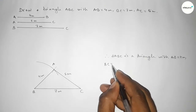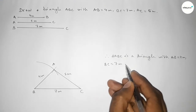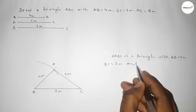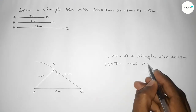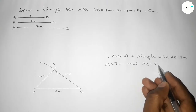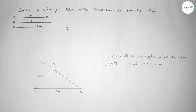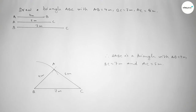Triangle ABC has AB equal to 4 centimeters, BC equal to 7 centimeters, and AC equal to 5 centimeters. That's all — thanks for watching. If this video is helpful to you, please share it with your friends.